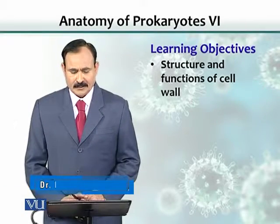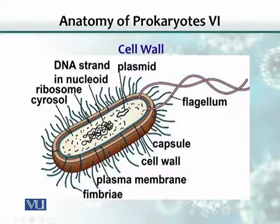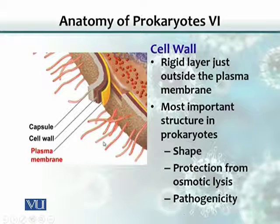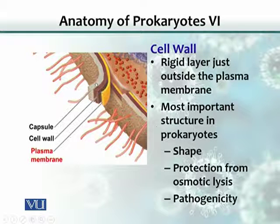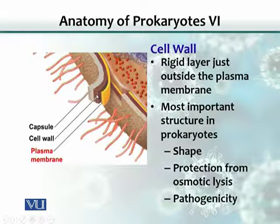The learning objectives are the structure and function of the cell wall. This is a bacterium in general, where you can see there are fimbriae, a flagellum, a capsule, and then a cell wall — the structure outside this blue line. Here is a much more exploded version of the membranes that cover the bacterium: the cell membrane, the cell wall, and the capsule. This is the structure we are going to study in this part.